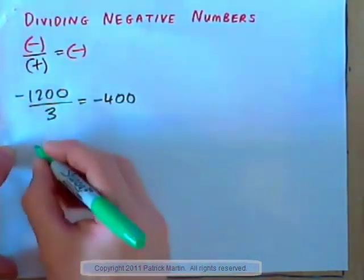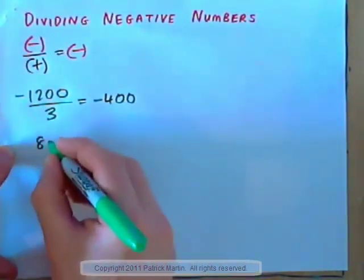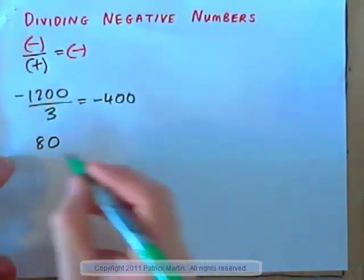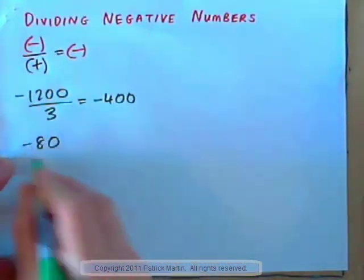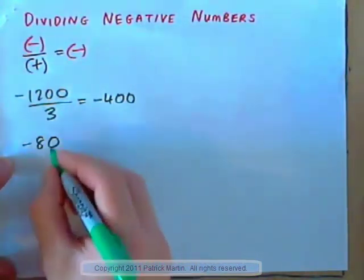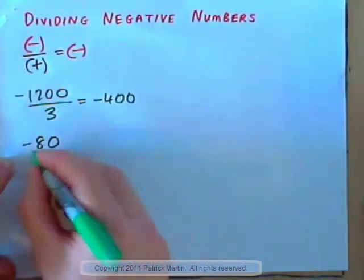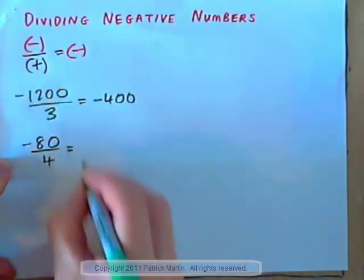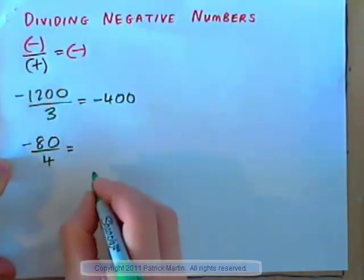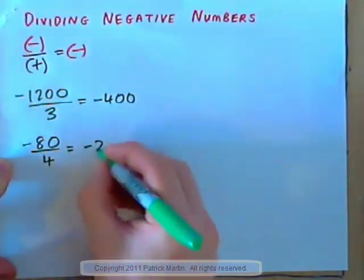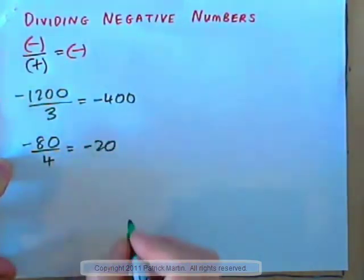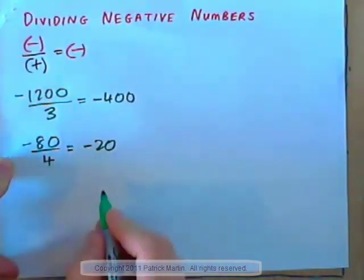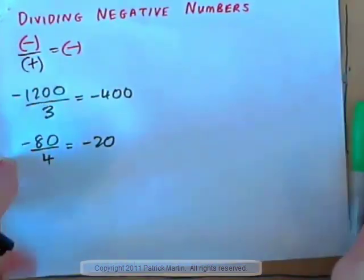If you go to a restaurant and the total bill is $80 — so negative 80 — and there's four people, divide that bill among four people, and each person has a bill of $20. So negative over positive is negative, and that makes sense.